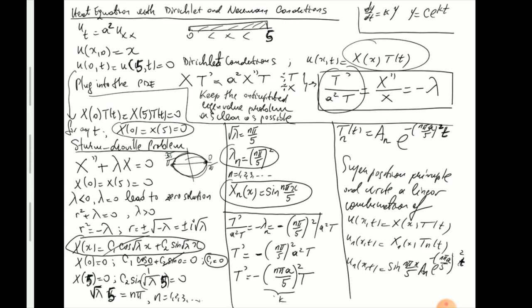Because we need to also satisfy the initial condition, we need to take a series representation of that initial condition. Those constants a_n will be determined when we impose the initial condition. The superposition means that we take the series of all the solutions we found: u(x,t) = Σ a_n · sin(nπx/5) · e^(−(nπa/5)² t).